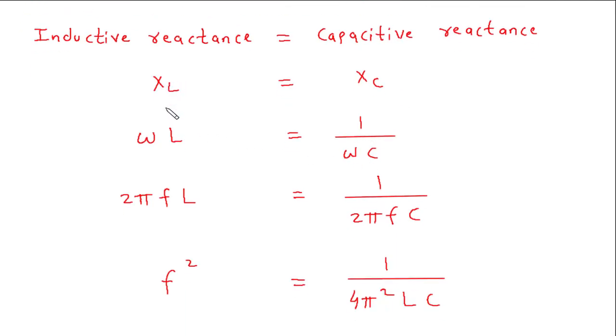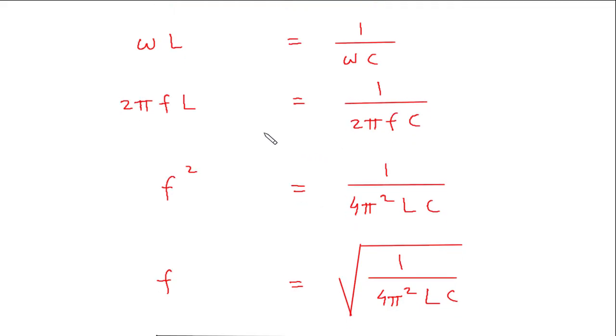Now XL is equal to ωL, where ω is the angular frequency. And XC is equal to 1 upon ωC. Now this ω is equal to 2πF. So 2πFL is equal to 1 upon 2πFC.